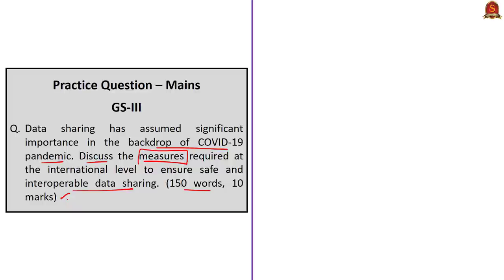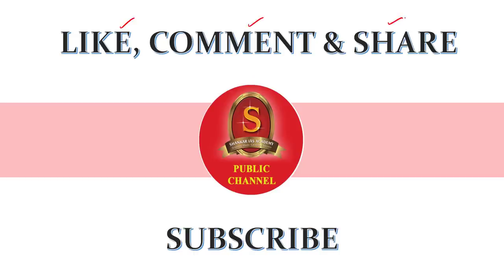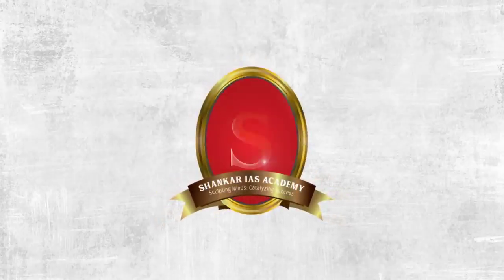The next mains question is: Data sharing has assumed significant importance in the backdrop of the COVID-19 pandemic. Discuss the measures required at the international level to ensure safe and interoperable data sharing. Answer in 150 words — it is a 10-mark question. Relate the statement briefly to the lack of data on COVID-19 origin and spread, and suggest measures such as a credible international data framework, an international body for data governance, and the need for cooperation from all stakeholders moving beyond geopolitics. With this we come to the end of today's analysis. If you like the video, press the like button, comment, share, and subscribe to Shankar IAS Academy's YouTube channel. Stay focused and motivated. Thank you.